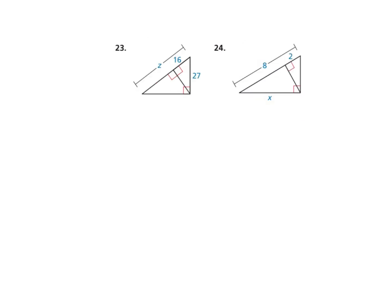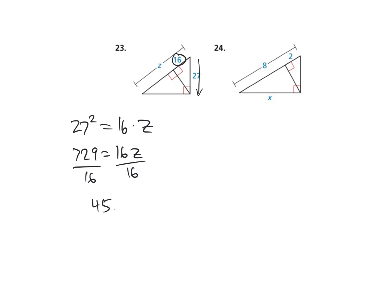Same thing here. We have the altitude is 27, equal to the closer leg times the whole thing, Z. So 27 squared is 729, equals 16Z. Divide off the 16, and we get Z is approximately 45.6.